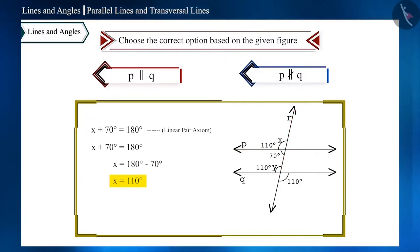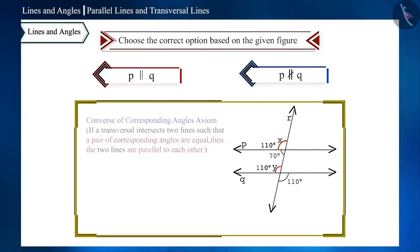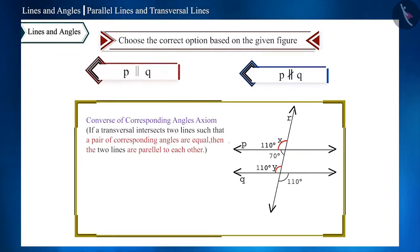Be careful, here the measure of both X and Y is same. And, using converse of the corresponding angles axiom, we can say that these two lines are parallel. Therefore, option 1 is correct.